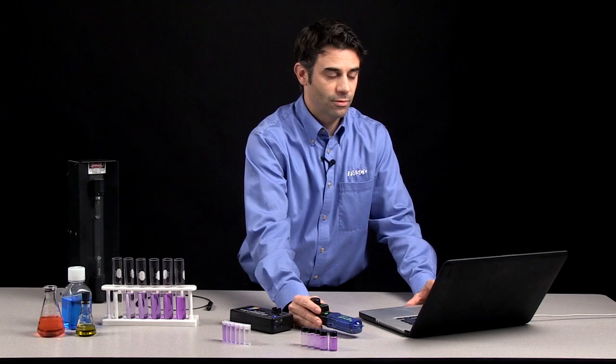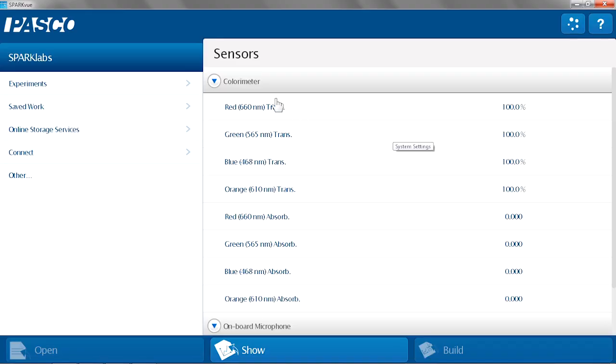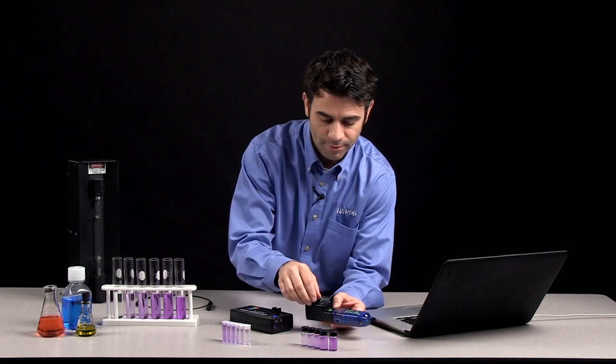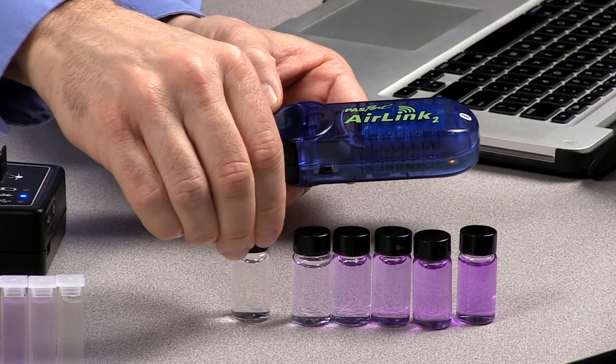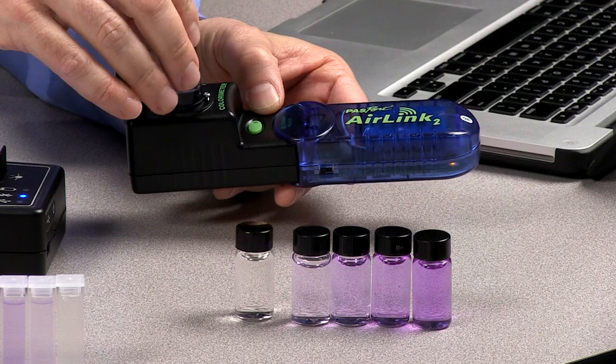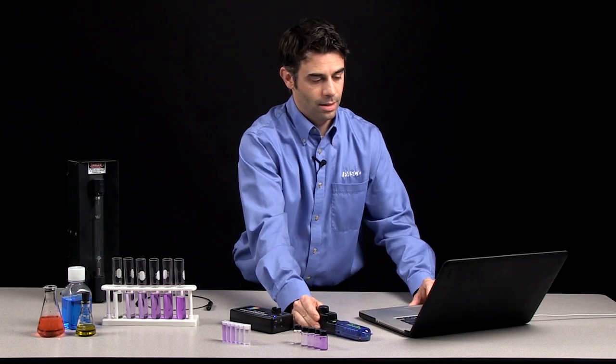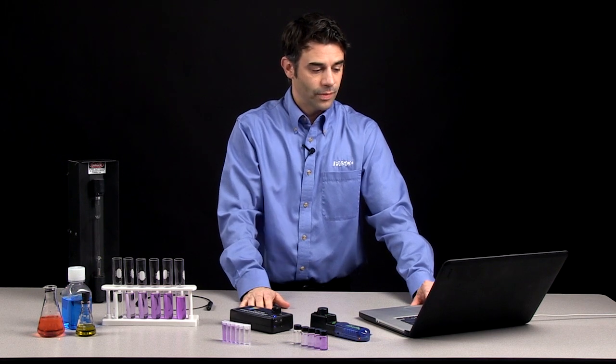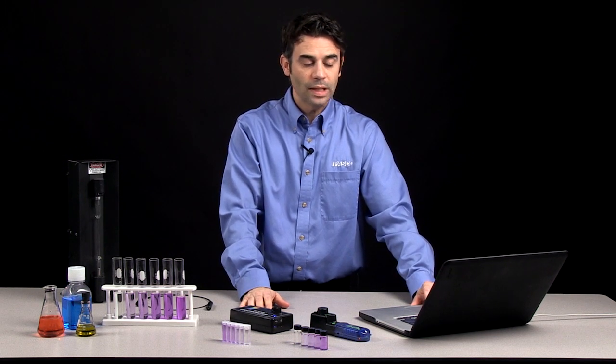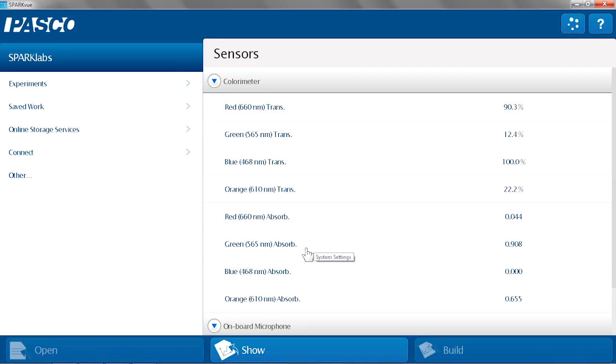The red, green, blue, and orange LEDs. Then in SparkView, right from the home screen, I can put in a sample, in this case some crystal violet, and I can see that the crystal violet absorbs mostly in the green part of the spectrum, with the 565 nanometer absorbance being the highest.